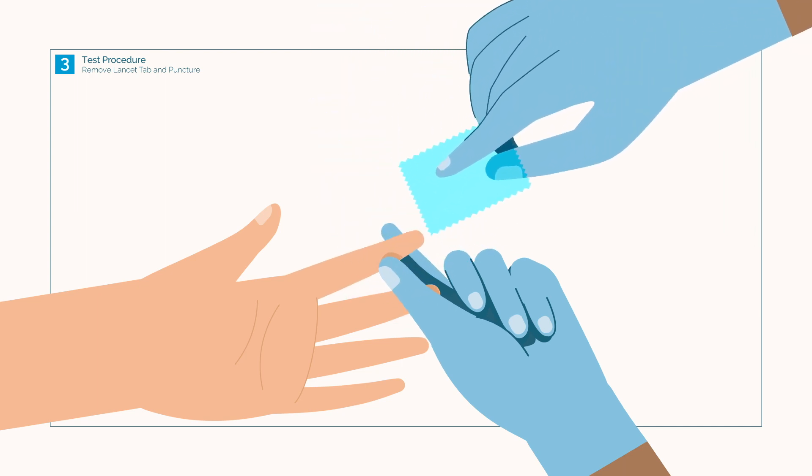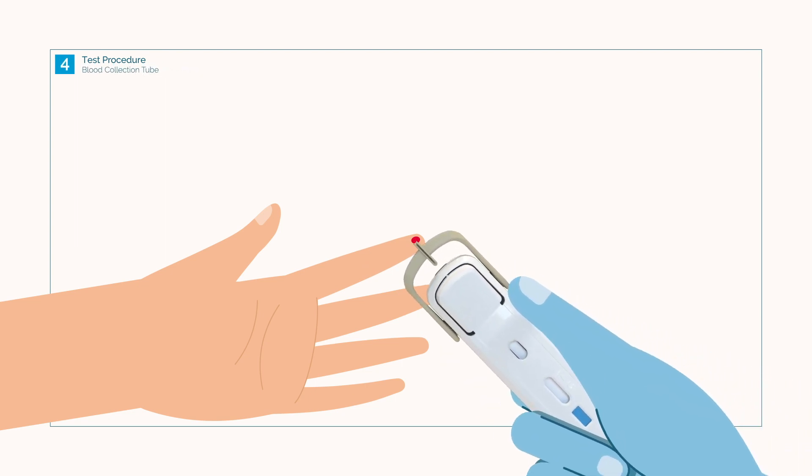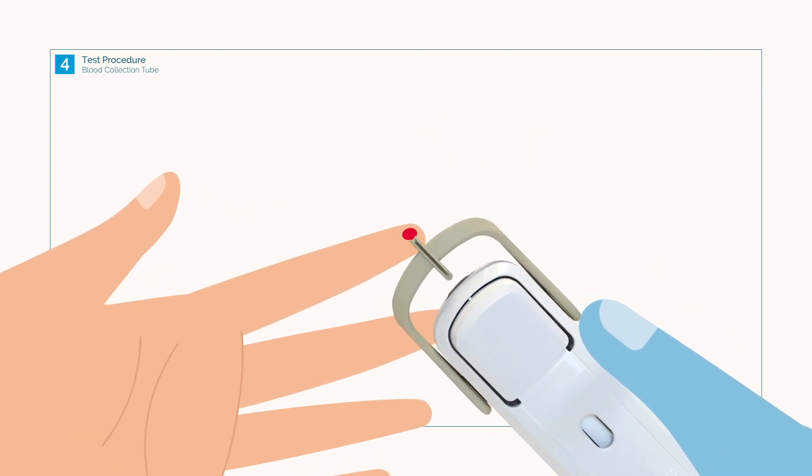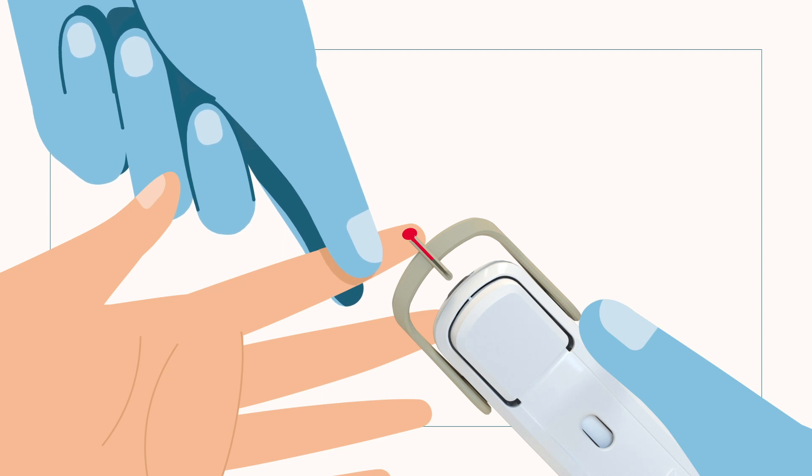Wipe away the first drop of blood with gauze and gently massage to encourage blood flow. Place the blood collection tube below the finger blood sample at a 45-degree angle. Fill the blood collection tube by touching the blood to the tip. Ensure blood collection tube is completely filled.